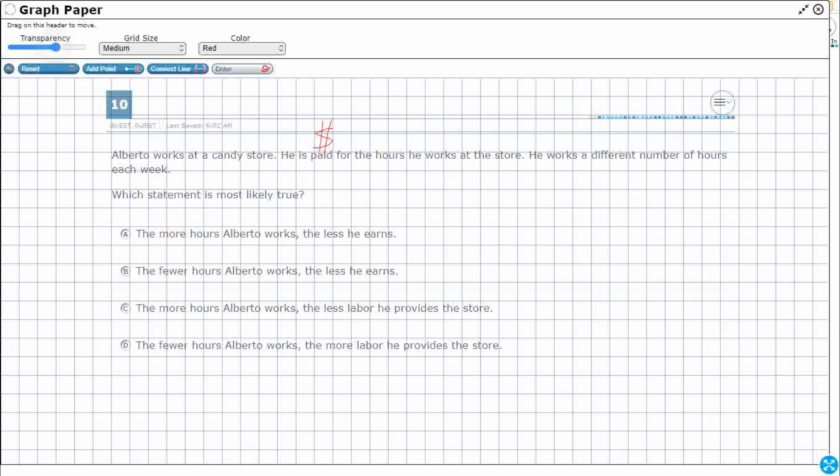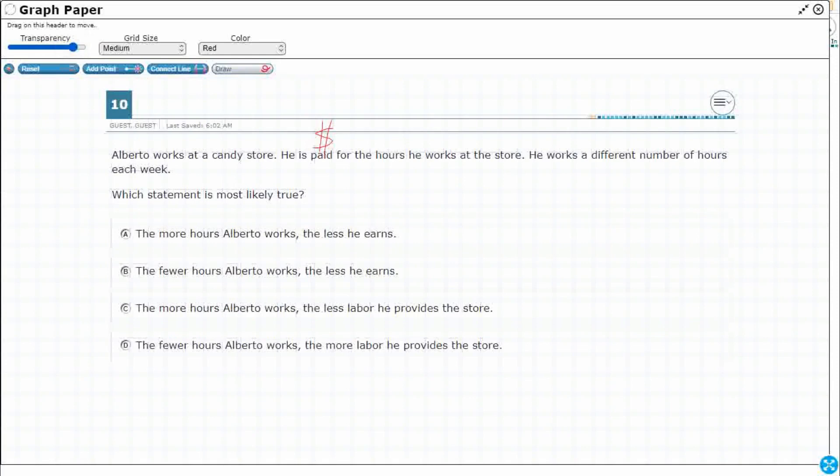Let me make this a little bit less visible. There we go. Alright, so the more hours that Alberto works, the less he earns, the fewer hours. Okay, so what is the relationship basically here between his hours and the amount of money he makes?